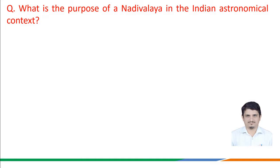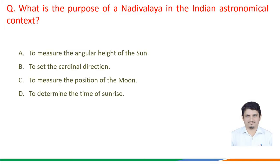The first question is: what is the purpose of a Nadiwalaya in the Indian Astronomical Context? The given options are: a) to measure the angular height of the sun, b) to set the cardinal direction, c) to measure the position of the moon, d) to determine the time of sunrise.